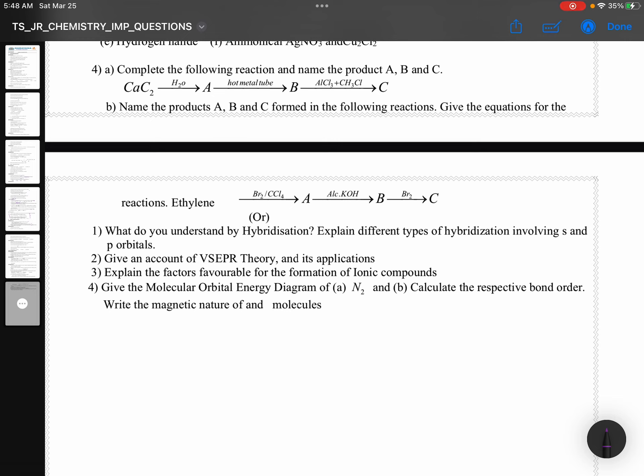Again, if organic questions are not there, you are coming to chemical bonding: hybridization, SP, SP2, SP3 hybridizations. VSEPR theory applications. Favorable conditions for the formation of ionic compounds. Molecular orbital energy diagram of nitrogen and oxygen. Both chances are there.